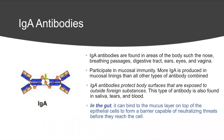IgA antibodies are found in areas of the body with a mucosal lining: the respiratory tract from the nose down into the lungs, the digestive tract, ears, eyes, and vaginal lining. These surfaces are exposed to the outside or to the environment — they come in contact with air, food, or foreign substances regularly. Mucosal surfaces have a large amount of IgA antibodies present in order to act as a first line of defense.